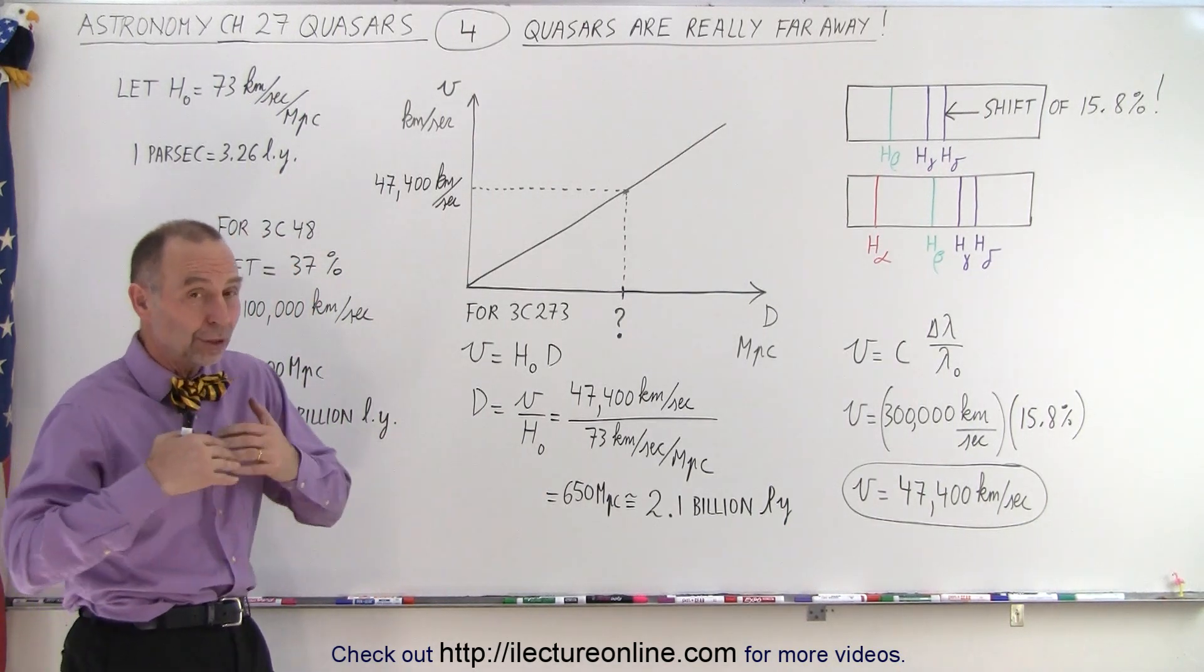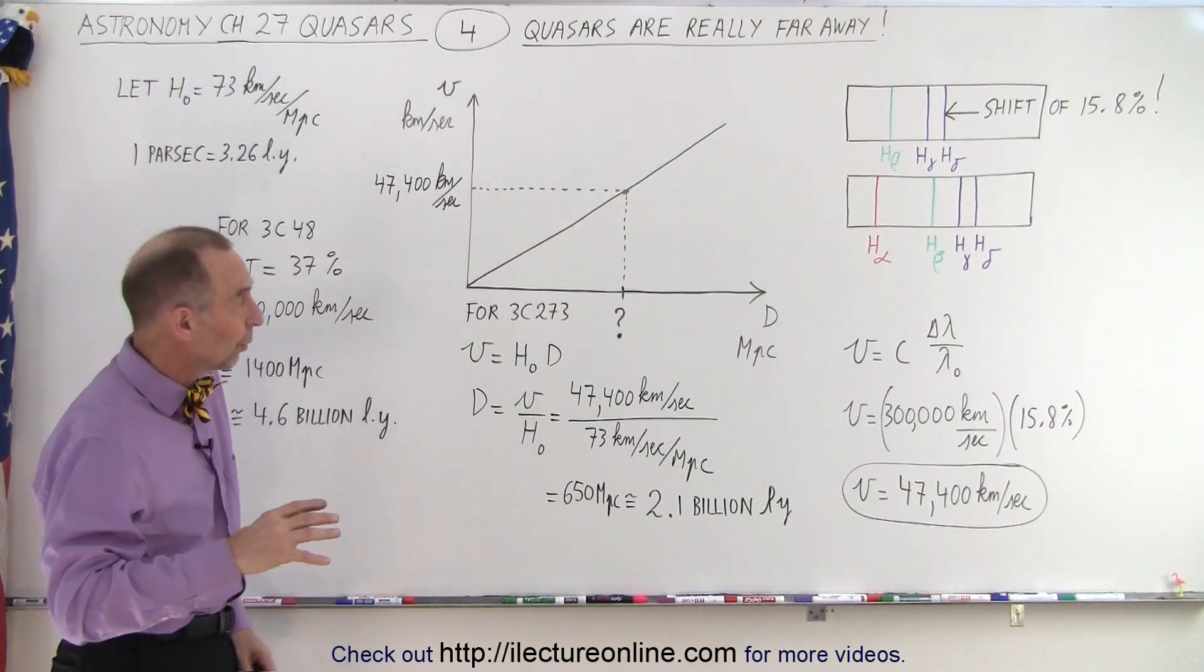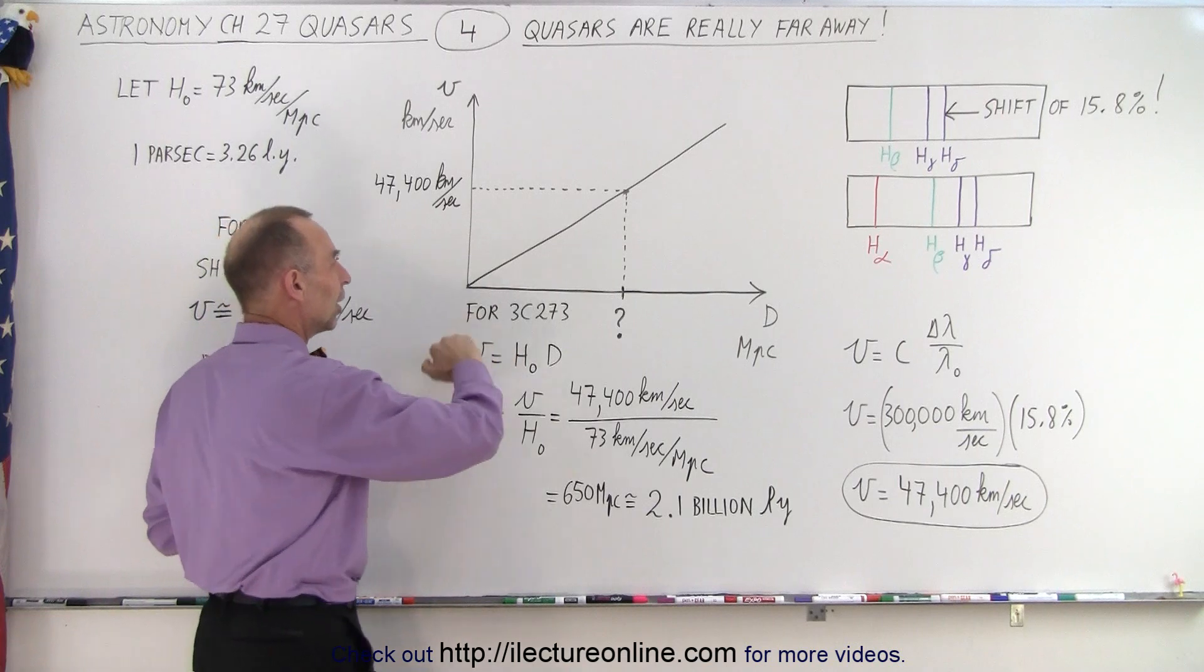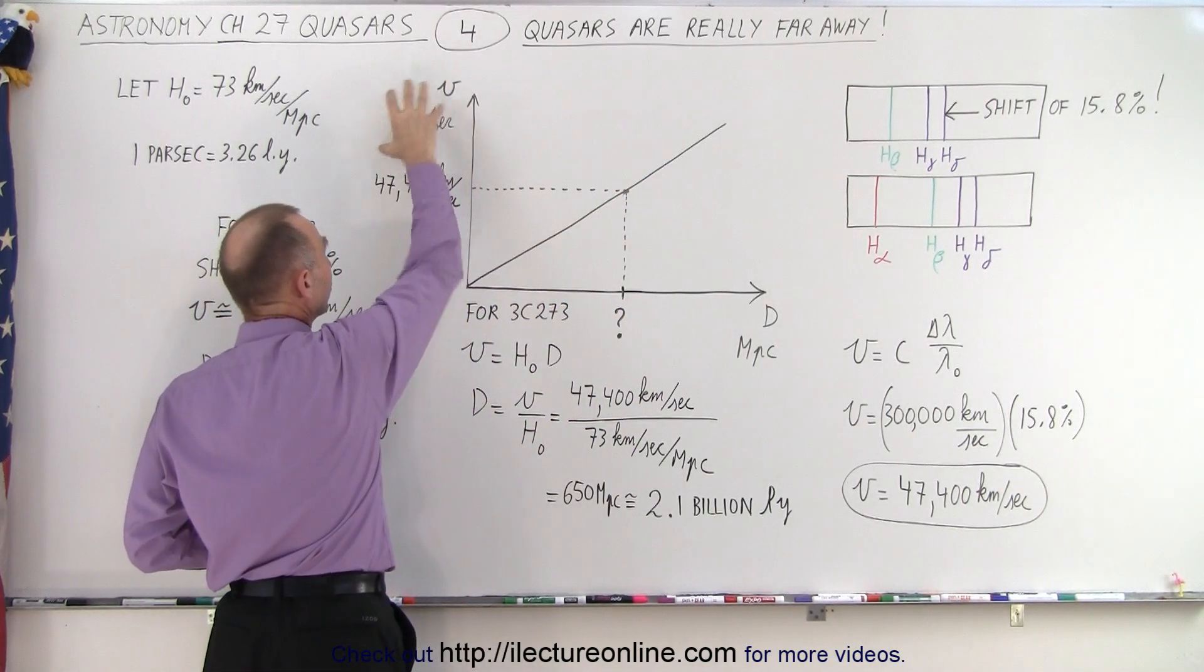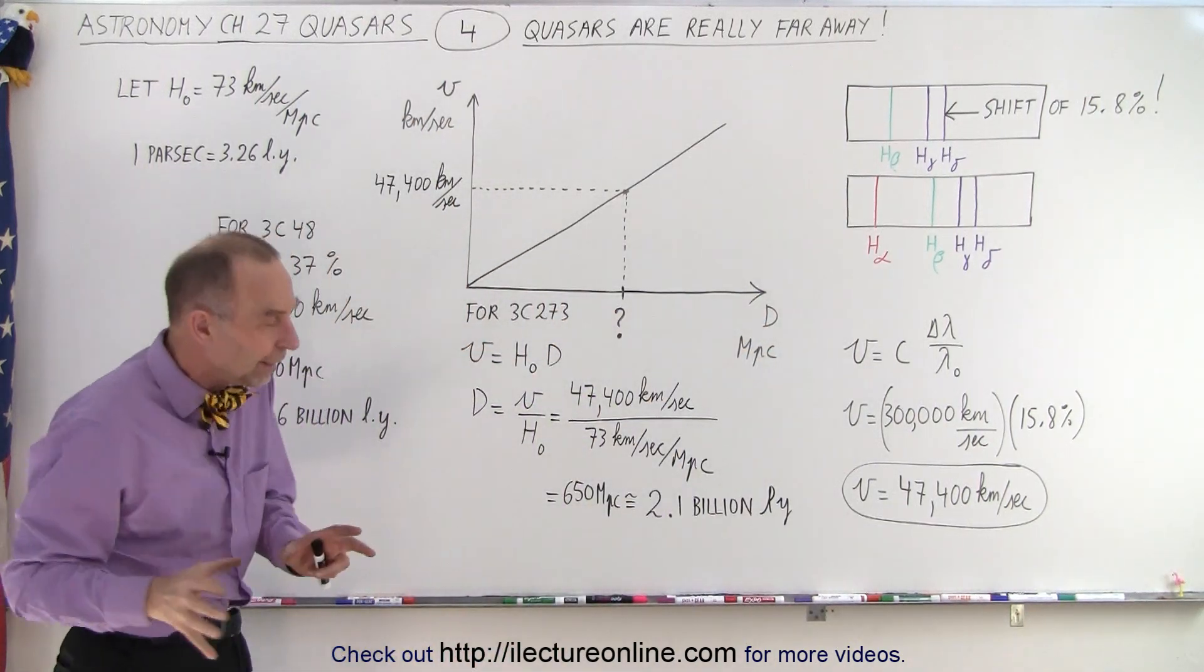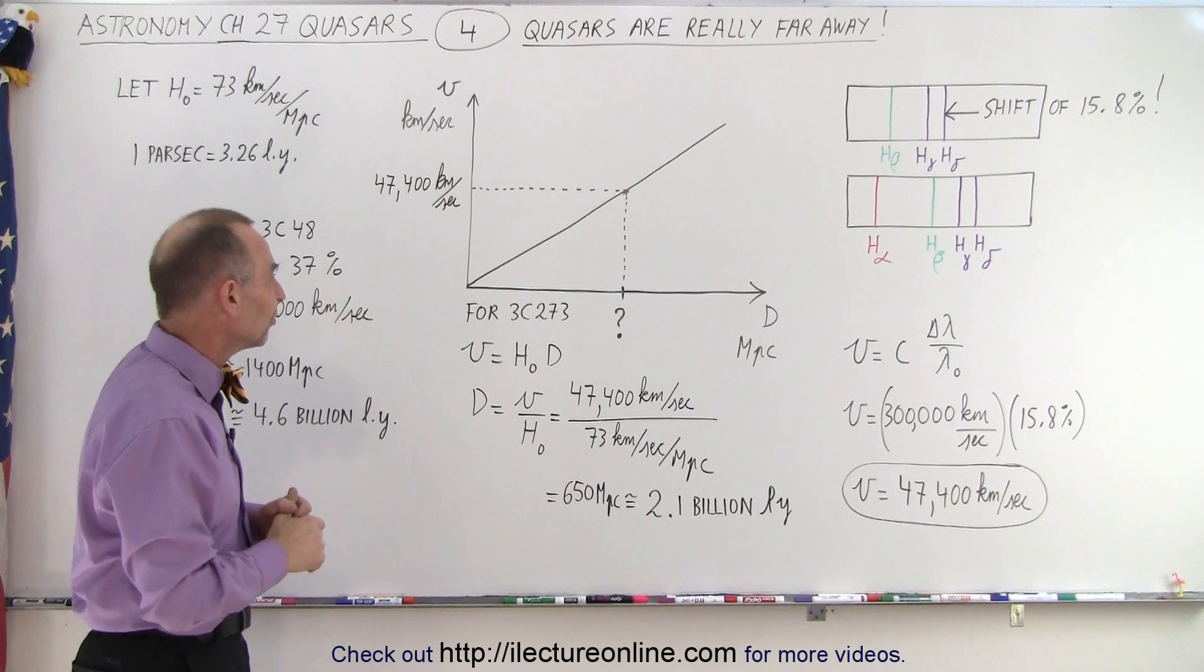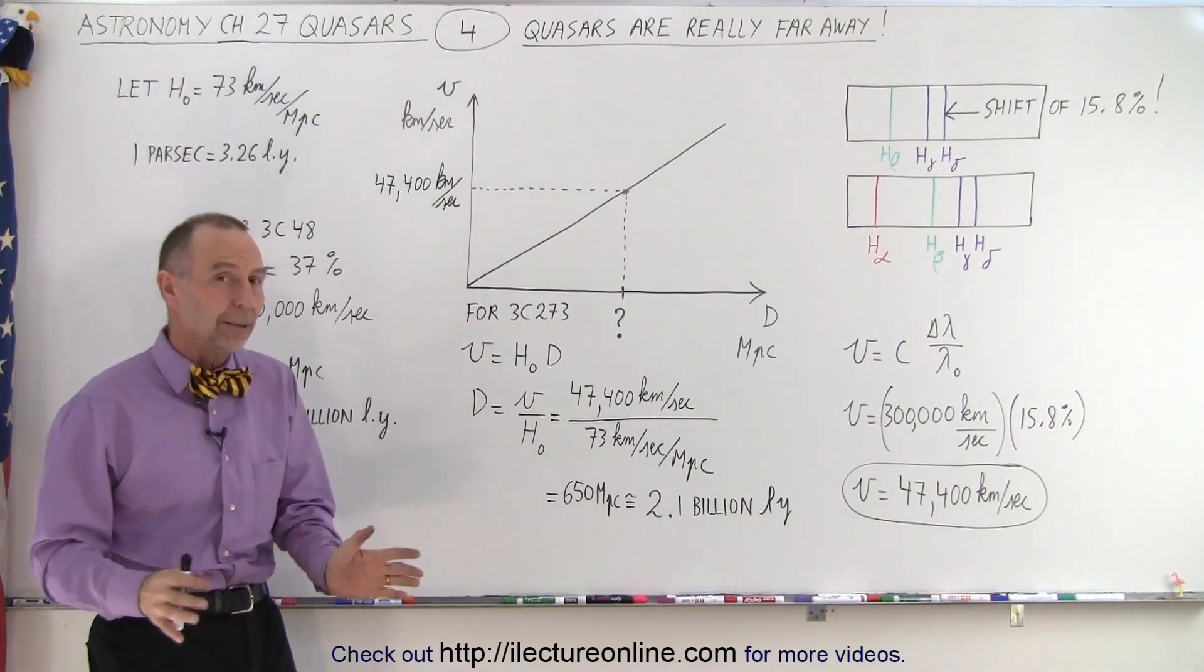Now, since we knew the Hubble relationship, the Hubble law, and the Hubble constant, what would happen if we plugged it into this concept? So here we have the Hubble diagram, where we have the Hubble constant, which is the slope of this line, and the relationship between the velocity at which things move away from us and how far they must be away from us. By then we had a fairly decent estimate for the Hubble constant.